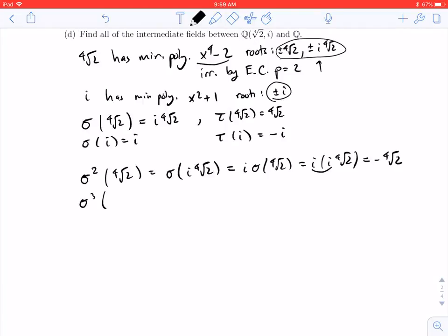And so from here, I can quickly see that the cube of sigma is going to send the fourth root of 2 to negative i times the fourth root of 2. And if I apply it a fourth time, then I'm actually going to get back the fourth root of 2. So this means that as an element of the Galois group, sigma has order 4. And you'll see, applying sigma, sigma squared, sigma cubed, and sigma to the fourth, I fix i all the time, but I get all 4 of the roots of x to the fourth minus 2.